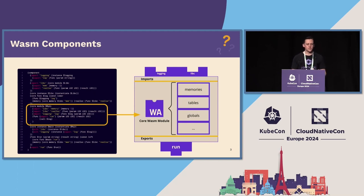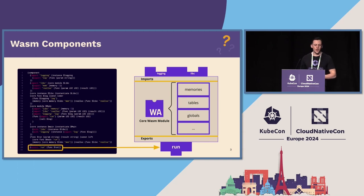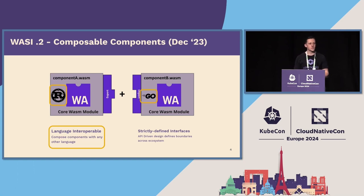Every single WebAssembly component has a set of imports and exports — you can think of this like the C FFI boundary. That's how it actually gets things done. We operate with a set of common imports and exports like HTTP, Blobstore, KeyValue, logging — these common application components that you use in cloud native applications every day.